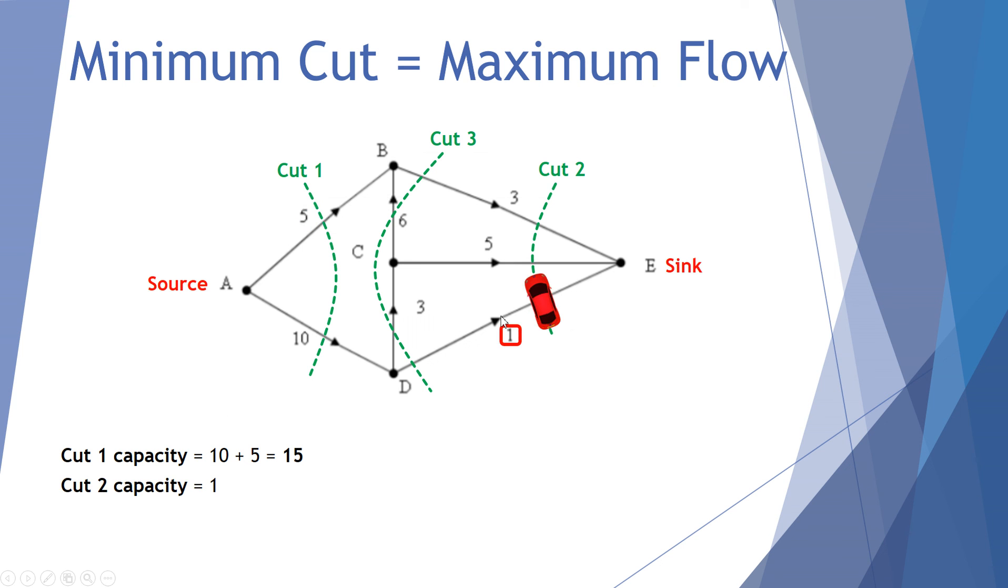Cut 2, this line, edge goes through the passenger and out the driver, left to right, so it counts. And finally, this capacity of 3 goes through the passenger, out the driver, left to right. It also counts, so cut 2 has a capacity of 9.